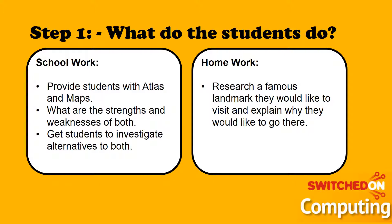The type of work they might do in the first lesson includes providing them with an atlas and a map, and exploring the strengths and weaknesses of both — for example a map might show more street-level detail, whereas an atlas gives an overall view with terrain information. You can get students to investigate alternatives to these and start thinking about electronic maps. For homework, they can research famous landmarks in the area or in general, and write a brief explanation of why they would like to go there, which also helps their literacy.